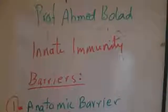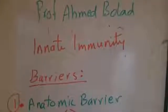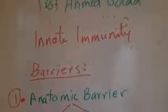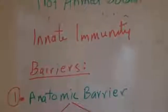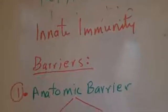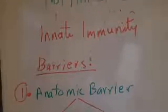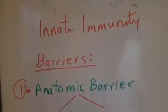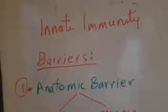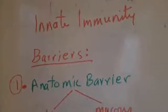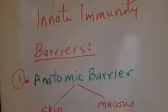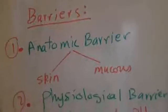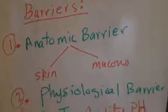Today I am going to talk about innate immunity. As you know, innate immunity is a basic immunity we are born with, and it comprises four barriers. The first barrier is an anatomic barrier.